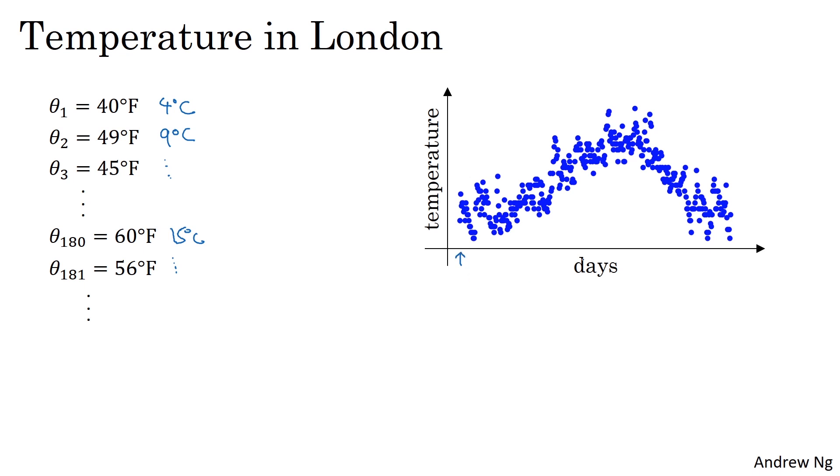So this would be January, January 1st, the middle of the year approaching summer, and this would be the data from the end of the year. So this data looks a little bit noisy and if you want to compute the trends, kind of the local average or moving average of the temperature, here's what you can do.